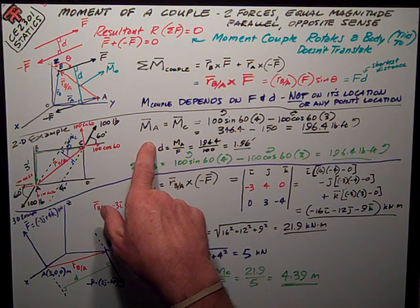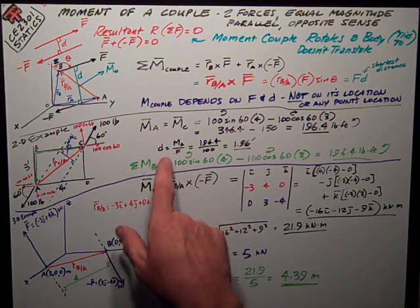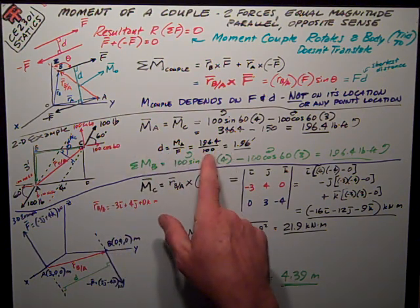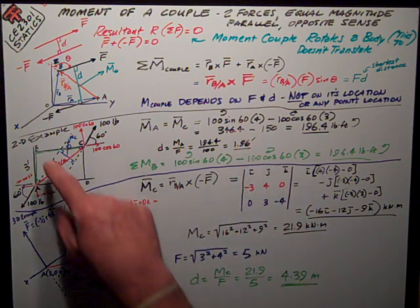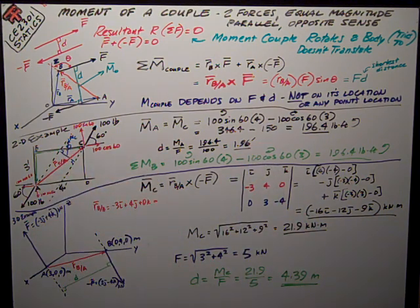My shortest perpendicular distance is really easy to figure. My moment divided by my force, 196.4 divided by 100, is 1.96 feet, is that perpendicular shortest distance.